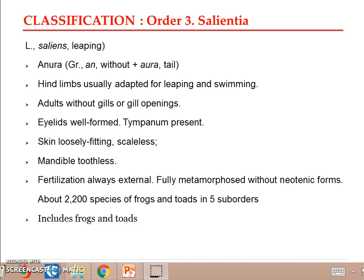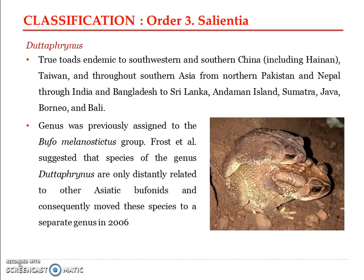The two genera to learn are Bufo, under toads, and Rhacophorus, under frogs. Frogs are usually adapted to live in freshwater bodies, while toads are found on moist terrestrial surfaces. Toads have rough or dry skin. Usually in amphibians, the skin is smooth, highly vascular, thin, and moist, and hence acts as a very good respiratory surface.